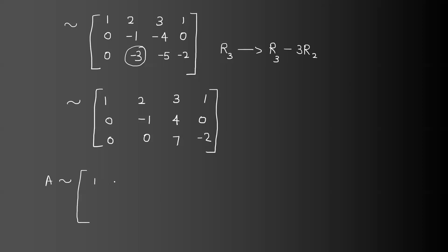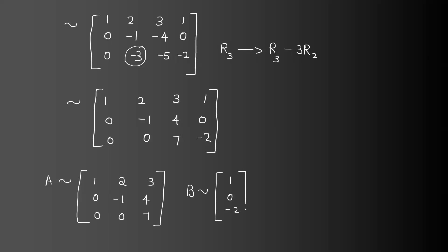So matrix A equals 1, 2, 3 — 0, minus 1, 4 — 0, 0, 7. And B equals 1, 0, minus 2. This completes the elimination step, giving us the upper triangular form.